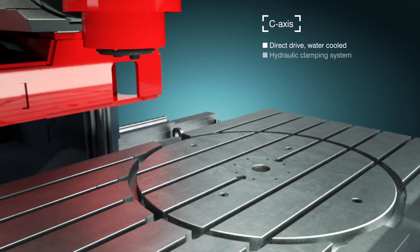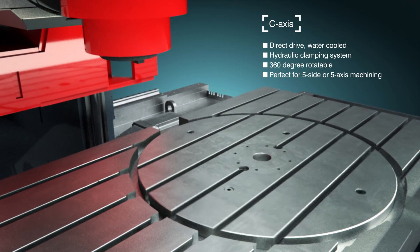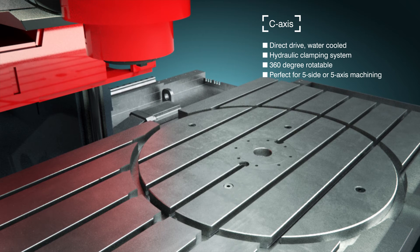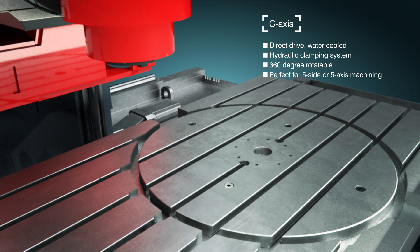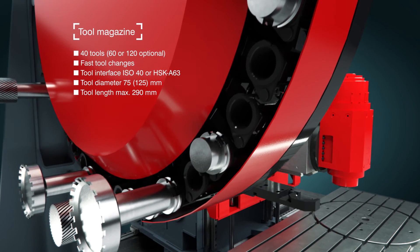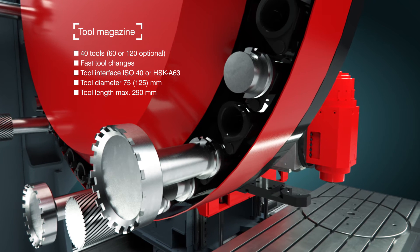The optionally available rotary table with continuous rotation and a diameter of 800 mm additionally allows for demanding simultaneous 5-sided or 5-axis machining for complex workpieces. This is supported by a comprehensively equipped tool magazine with up to 120 tool stations.